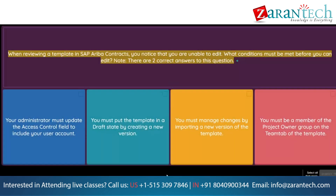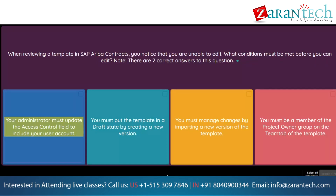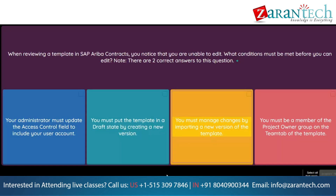Question: When reviewing a template in SAP Ariba Contracts, you notice that you are unable to edit. What conditions must be met before you can edit? Note: there are two correct answers. Option 1: Your administrator must update the access control field to include your user account. Option 2: You must put the template in a draft state by creating a new version. Option 3: You must manage changes by importing a new version of the template. Option 4: You must be a member of the project owner group on the team tab of the template.